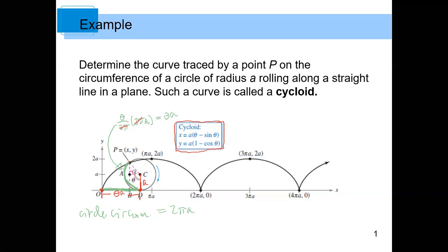Now I want to describe the coordinates of the point x, y at this particular moment, with θ as our parameter. When the point reaches the top — at 180 degrees or π — the x-coordinate would be πa, which is exactly θ at that point. The y-coordinate would be 2a, because you'd be two radii high — one full diameter above the ground.